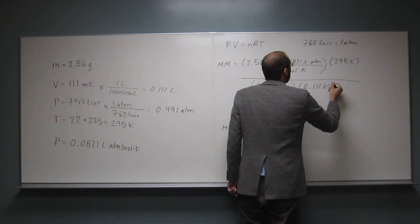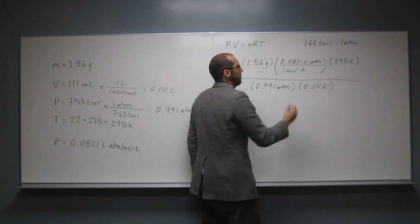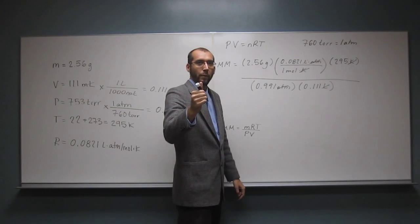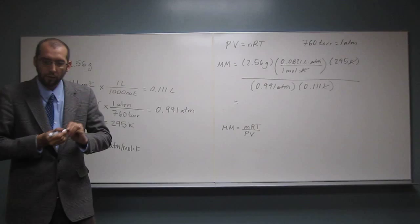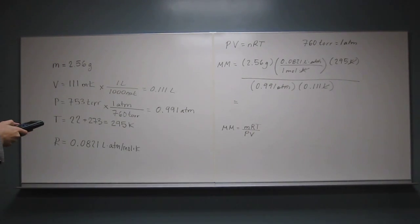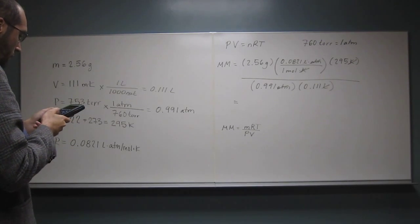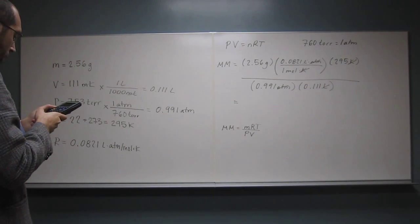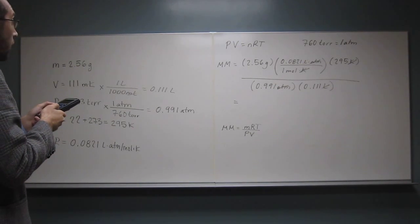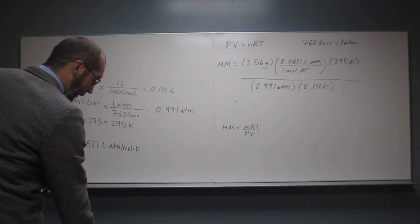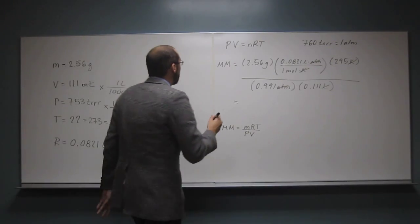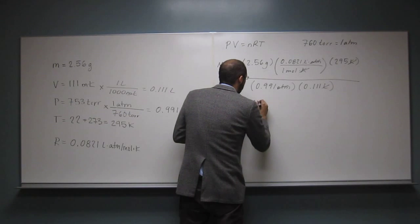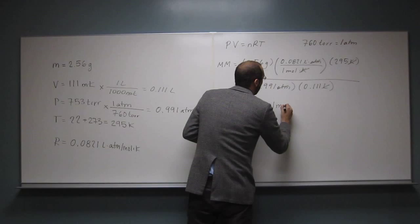So, liters cancels with liters, atm cancels with atm, kelvin cancels with kelvin, and what do we have left? Grams divided by moles. That's good molar mass, right? So, now all we do is use the calculator, times 0.111 divided by 2.56 divided by that times 0.821 and then multiply that by 295, and I get an answer of, took three sig figs, 564 grams per mole.